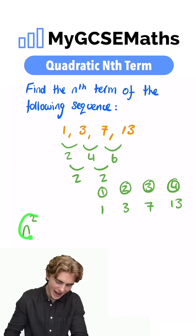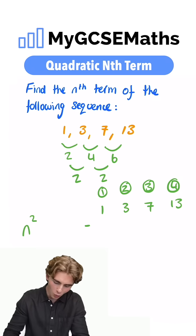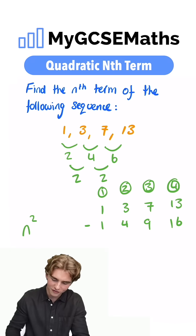What next? We're going to calculate n squared, our term number squared, and we're going to subtract that from our sequence to get a new sequence. So we're going to take 1 squared, which is 1 from the first term, 2 squared, which is 4 from the second term, 3 squared, which is 9 from the third term, and 4 squared, which is 16 from the fourth term.